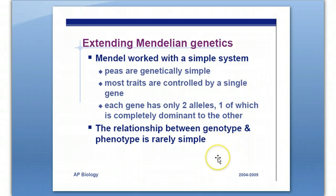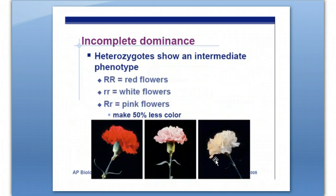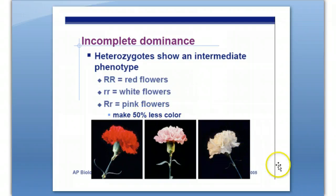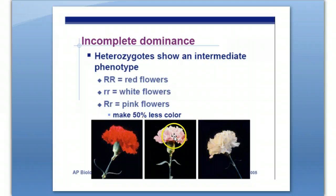Mendel worked with a simple system. However, genetics is a lot more complicated than just simple dominance and recessive. For example, a concept called incomplete dominance. With carnations and snapdragons, if you have a red flower — big R, big R — that gives red flowers, and little r, little r gives white flowers, no different from regular genetics. However, in incomplete dominance, the genotype big R, little r — the heterozygotes — produces a blending of the two traits. Think of it like paint being mixed together: red paint plus white paint makes pink paint. Carnations are an example. The heterozygotes show a blending of the two characteristics.